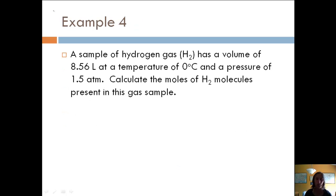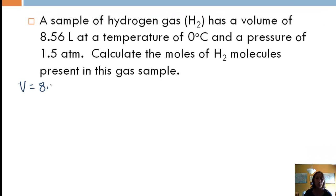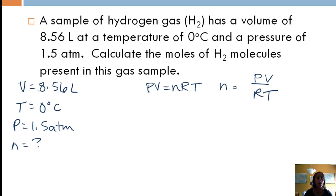Let's take a look at an example for the ideal gas law. A sample of hydrogen gas has a volume of 8.56 liters at a temperature of 0 degrees Celsius and a pressure of 1.5 atmospheres. We want to calculate the number of moles. Well, we have no different conditions, no V1, V2. I just want to find the number of moles. So I'm going to use the ideal gas law, PV equals nRT. If I'm solving for number of moles, I'm going to rearrange to PV over RT.